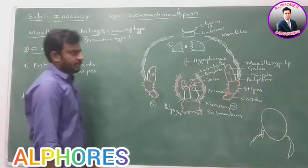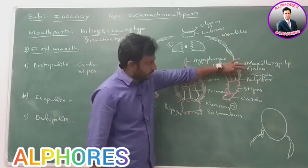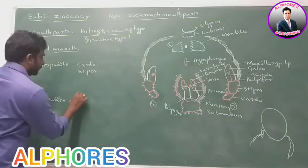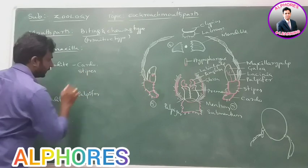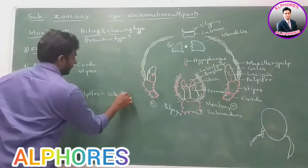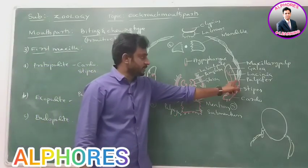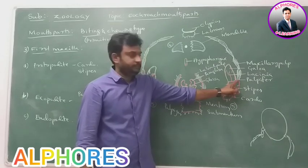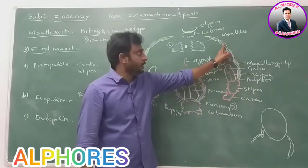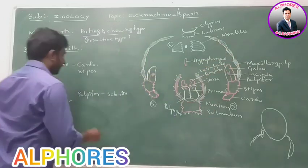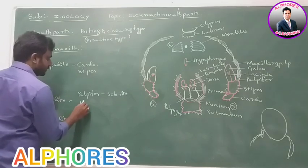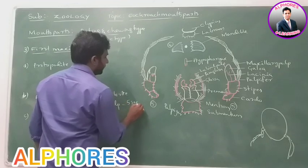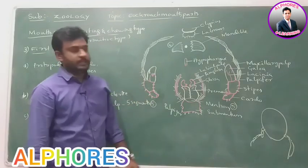The exopodite consists of two parts. On the outer side of the stipes, one small plate called palpifer is present — palpifer is a sclerite. On the palpifer, a five-segmented palp arises which is called maxillary palp. So exopodite consists of palpifer and the five-segmented maxillary palp.